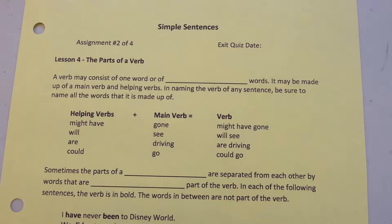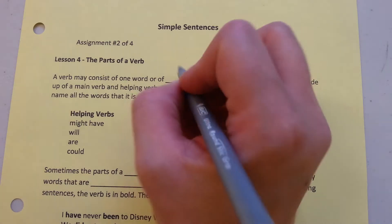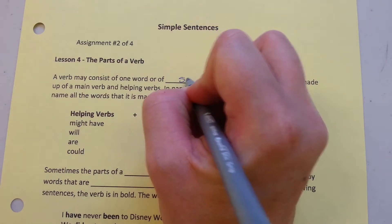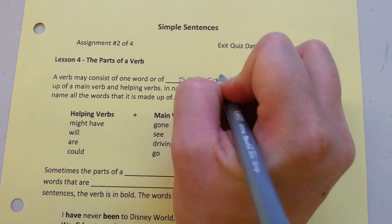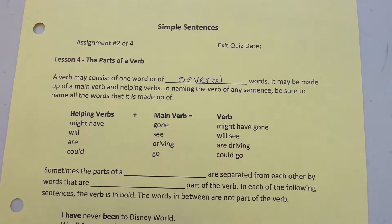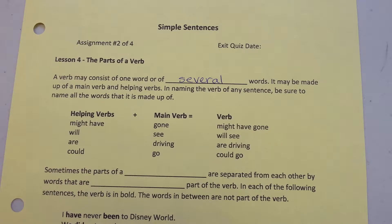Lesson 4: The parts of a verb. A verb may consist of one word or of several words. It may be made up of a main verb and helping verbs. In naming the verb in any sentence, be sure to name all the words that it's made up of.